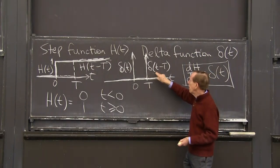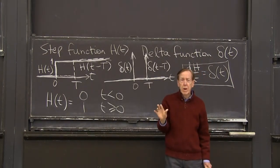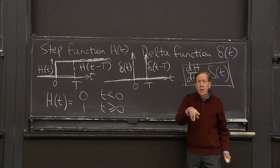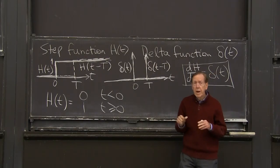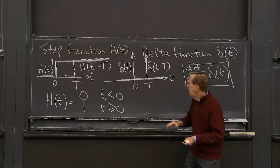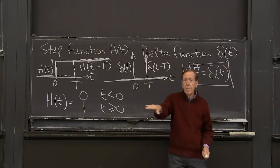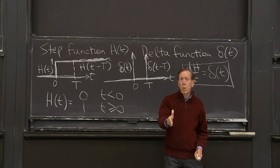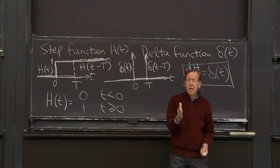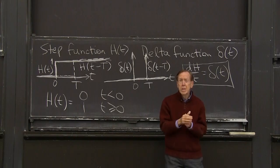So this is what I would use. If that was the source term in my differential equation, what would that mean? If this was the q of t in the differential equation reflecting input at different times, that function would say no input except at one moment, at one instant, capital T, at that instant of time, you put one in in an instant.